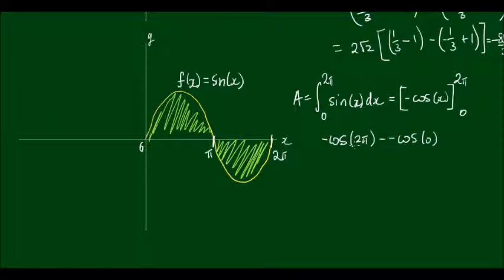So cos(0) is equal to 1. So negative 1 plus 1 is equal to 0.